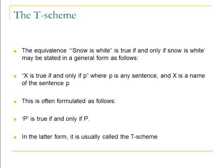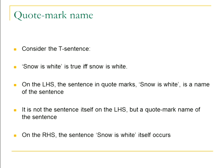Some people think the T-scheme is all there is to truth — that P is true if and only if P is all we need to define a notion of truth, and that you add nothing more. That's a deflationary view. A T-sentence is a specific instance like 'snow is white is true if and only if snow is white,' while the T-scheme is the general pattern P is true if and only if P.